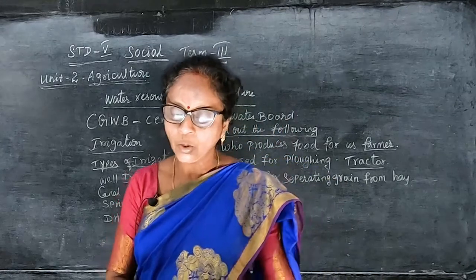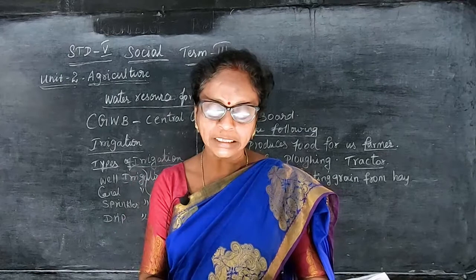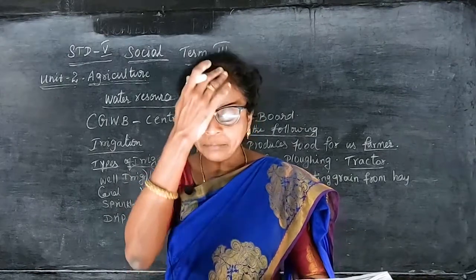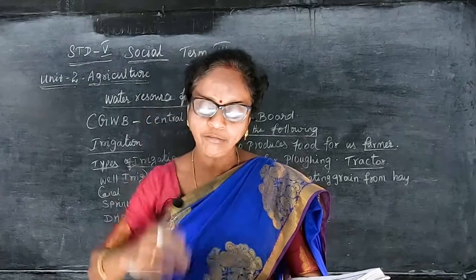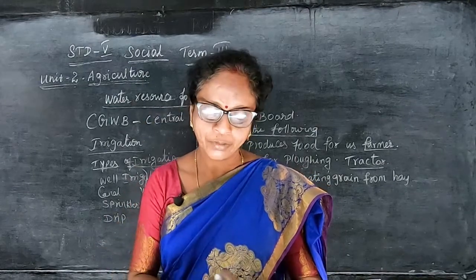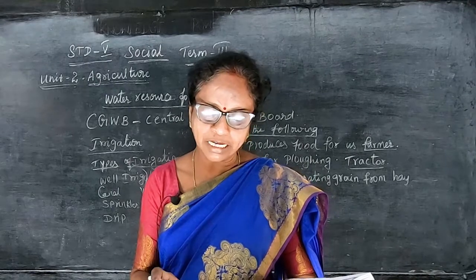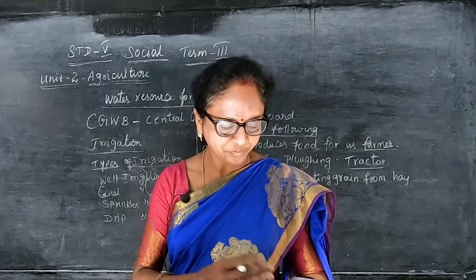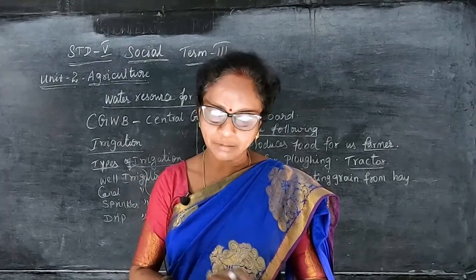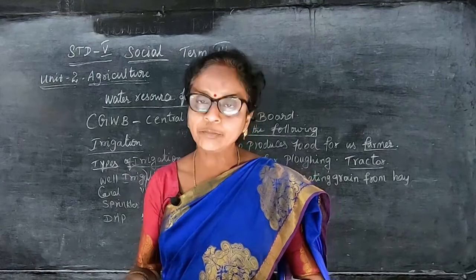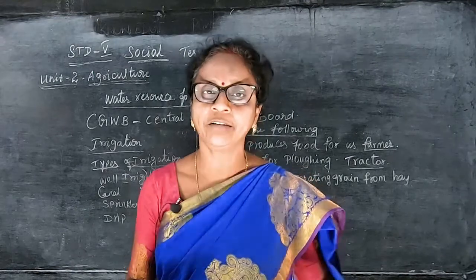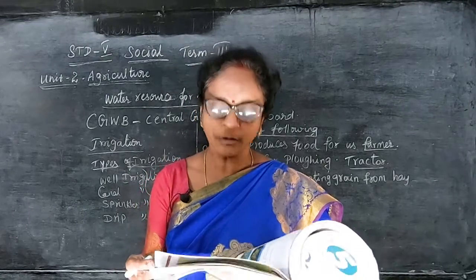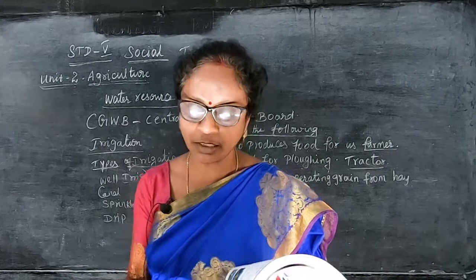Cash crops in Tamil Nadu include cotton, sugarcane, oil seeds, coffee, tea, rubber, coconut, gingelly, and chillies. Mango and banana are the leading fruit crops. The main flowers grown are jasmine, chrysanthemum, marigold, and rose. Horticulture is the fastest growing sector within agriculture in Tamil Nadu. Tanjavur, located in the Kaveri Delta, is known as the rice bowl of Tamil Nadu.